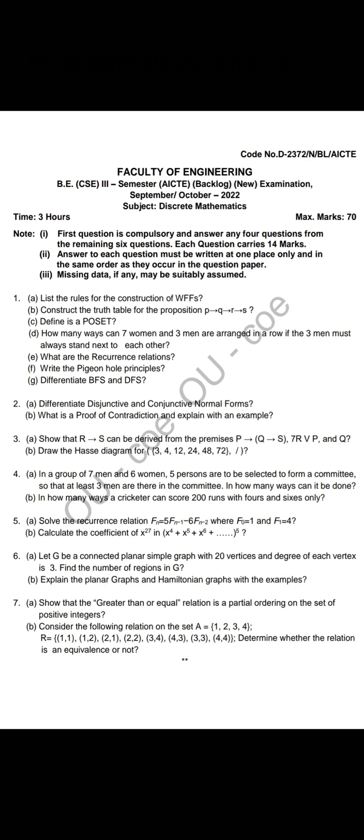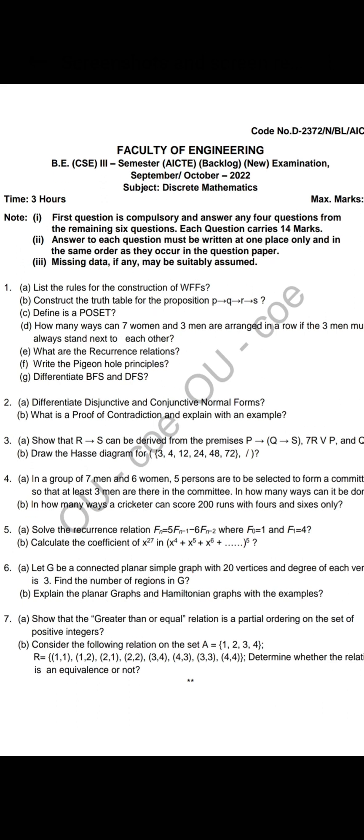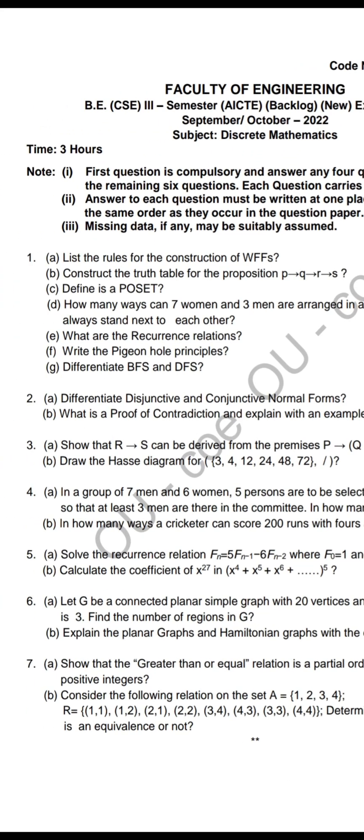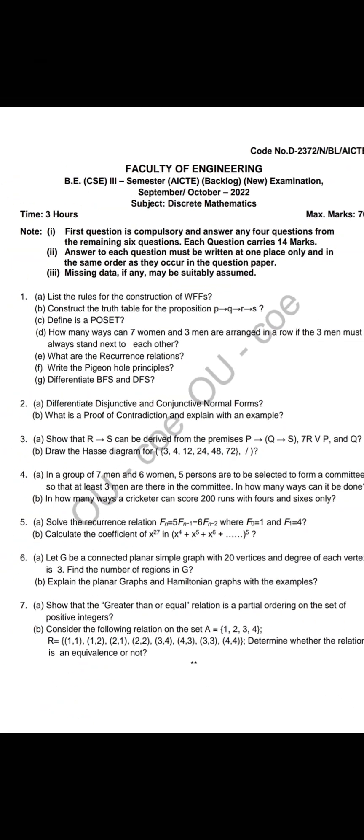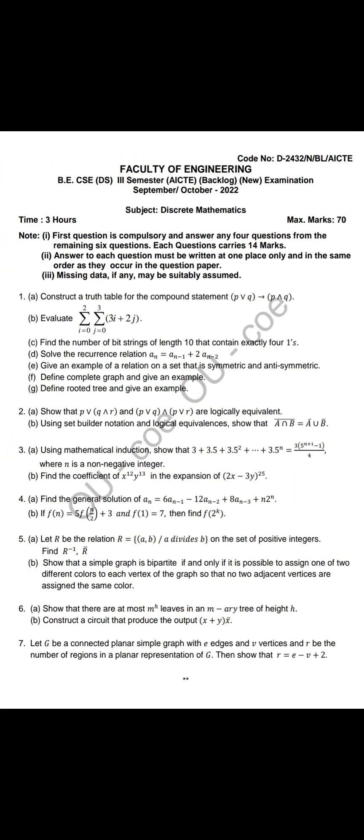This is one paper we have. Short answers, seven short answers we have to write, each one is two marks, fourteen. Then long answers, we have to write any four. So fourteen plus fifty-six is seventy marks paper. Go through all the recurrence relations problems and all.